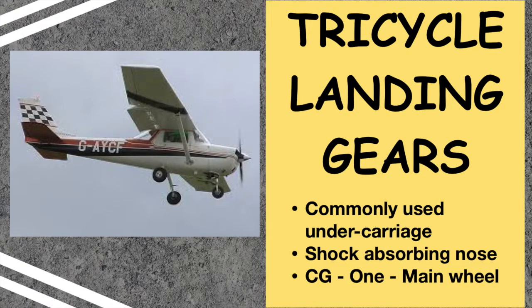Tricycle gear is the most prevalent landing gear configuration in aviation. In addition to the main wheels, a shock-absorbing nose wheel is at the forward end of the fuselage. Thus, the center of gravity is forward of the main wheels. The tail of the aircraft is suspended off the ground, and a clear view straight ahead from the cockpit is given. Ground looping is nearly eliminated since the center of gravity follows the directional nose wheel and remains between the mains.